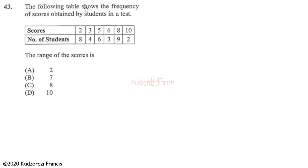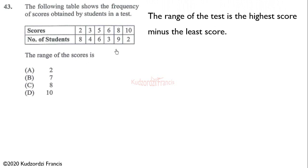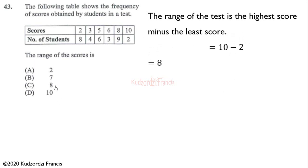Question 43: the following table shows the frequency of scores obtained by students in a test. The range is the highest value minus the lowest value. The lowest score is 2 and the highest score is 10, so the range is 10 minus 2, which equals 8. The correct answer is C.